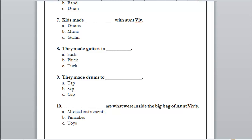Number nine: they made drums too — what was the action? To tap — yes. Number ten: what were inside the big bag of Aunt Vive's — musical instruments, pancakes, or toys? Yes, musical instruments. As we remember, there were drums and guitars.